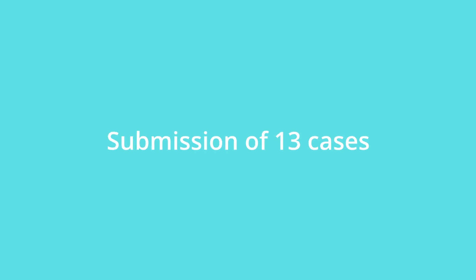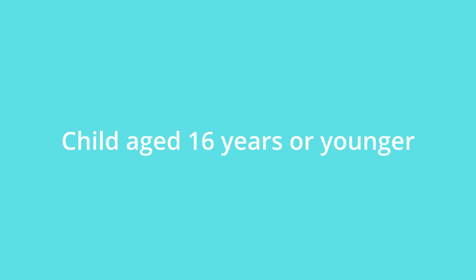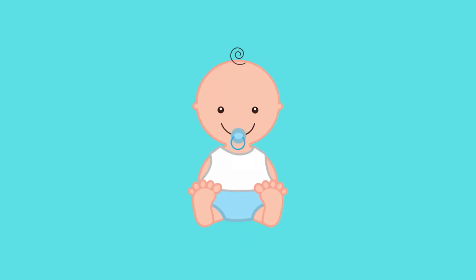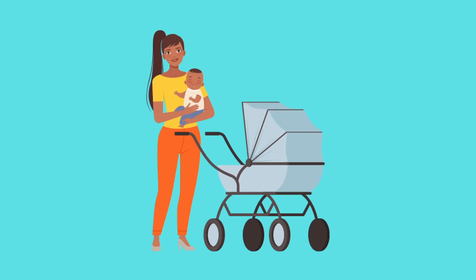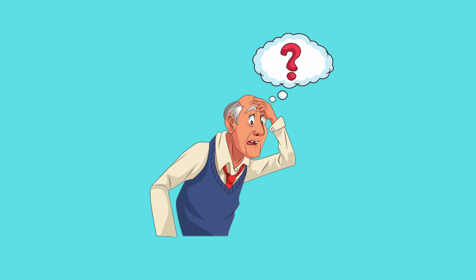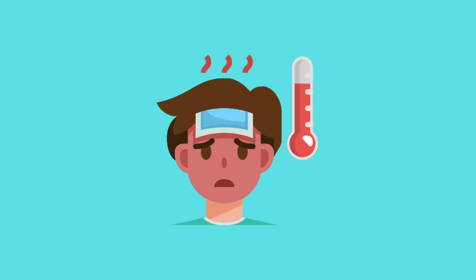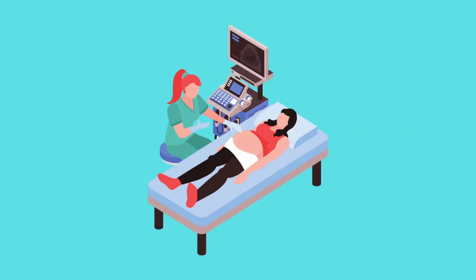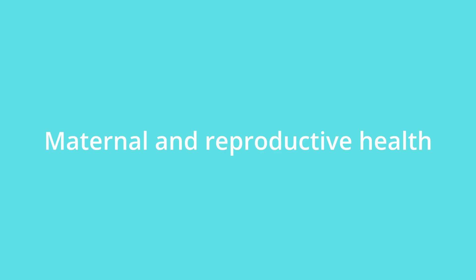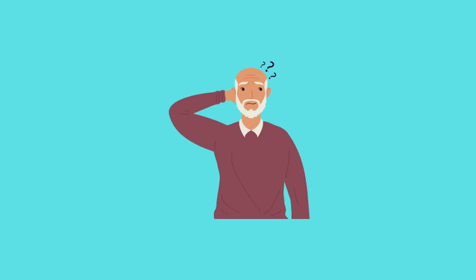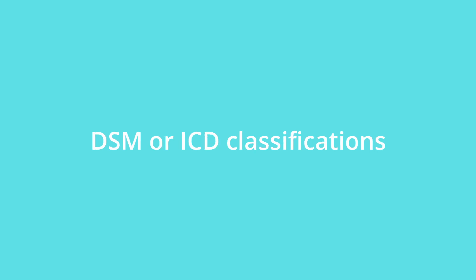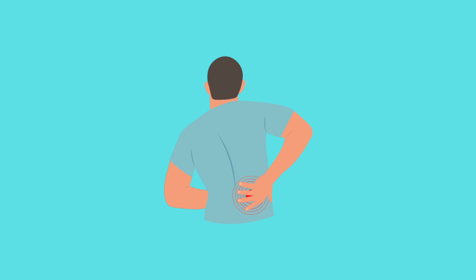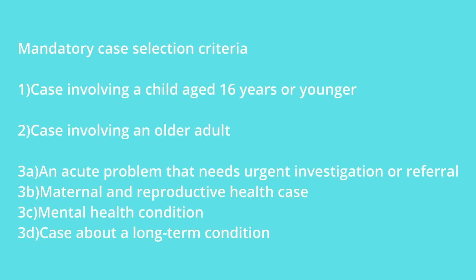It's important that you ensure your submission meets the requirements set by the college. Let's go over the mandatory case selection criteria. You need a case involving a child aged 16 years or younger — this could also be a consultation done by proxy with a parent or carer. You need a case involving an older adult over 65, an acute problem needing urgent investigation or referral, a maternal and reproductive health case, a mental health condition diagnosed within the DSM or ICD classifications, and a case about a long-term condition such as cancer, multimorbidity, or disability. I highly recommend you focus on recording these cases first so that you meet the requirement.